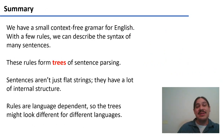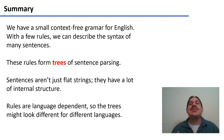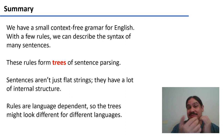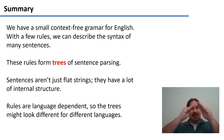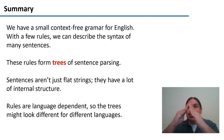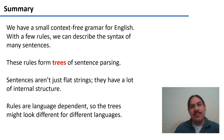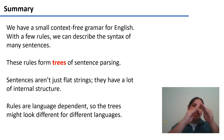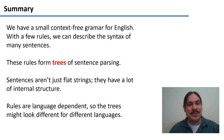As a quick summary: with the rules we have, we have a very small context-free grammar for English. With a few rules, we can describe the syntax of many English sentences, and these rules form trees of sentence parsing. Sentences aren't just flat strings — they have a lot of internal structure that can tell us who did what and when. Rules are language dependent, so trees might look different for different languages — Japanese and English might be mirror images of each other. In the next couple of videos, we will practice with context-free grammars.